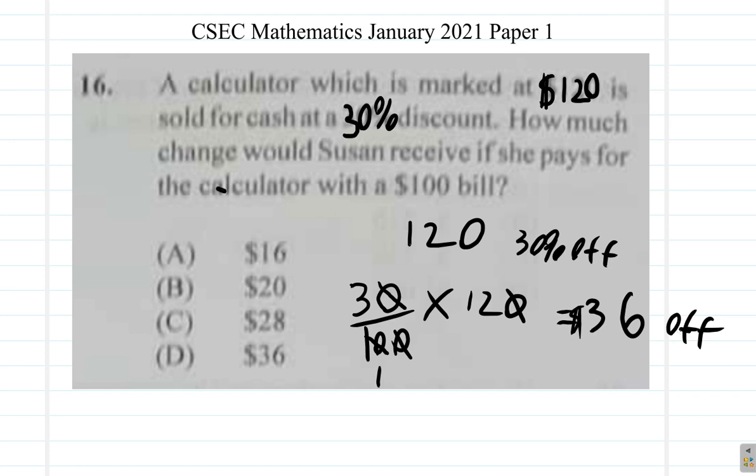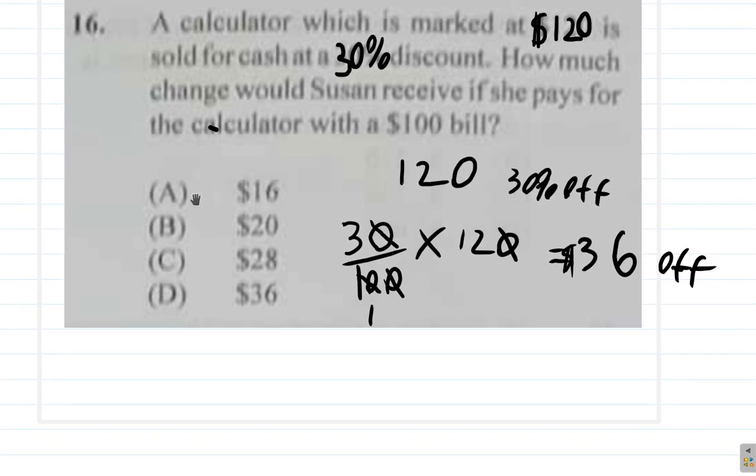Now, the price after discount is what? Discount price is going to be $120 and you take $36 off. You could say you borrow 1 from 2, you get 1, 10 minus 6 is 4. 1 minus 3, you can't borrow 1 from 1, you get 0. So this is 11.